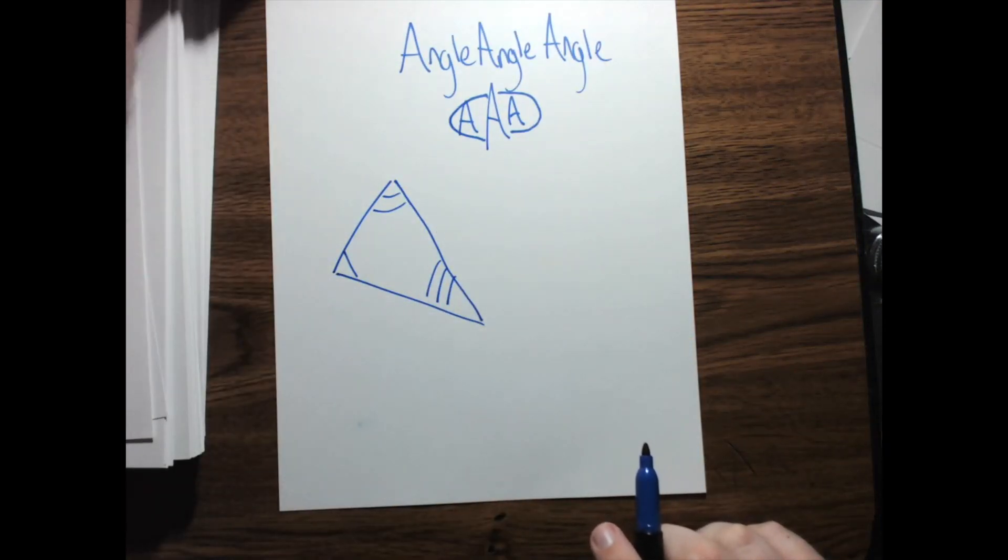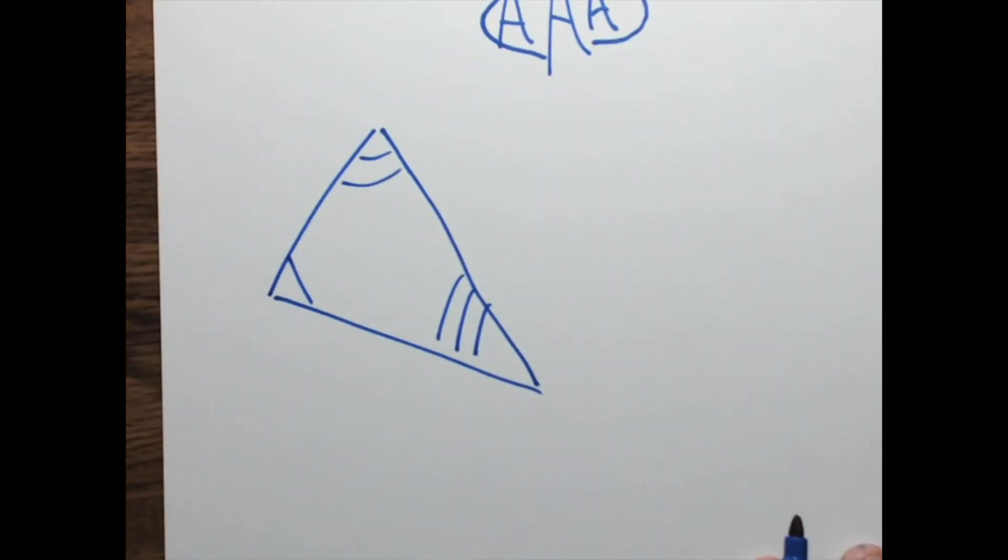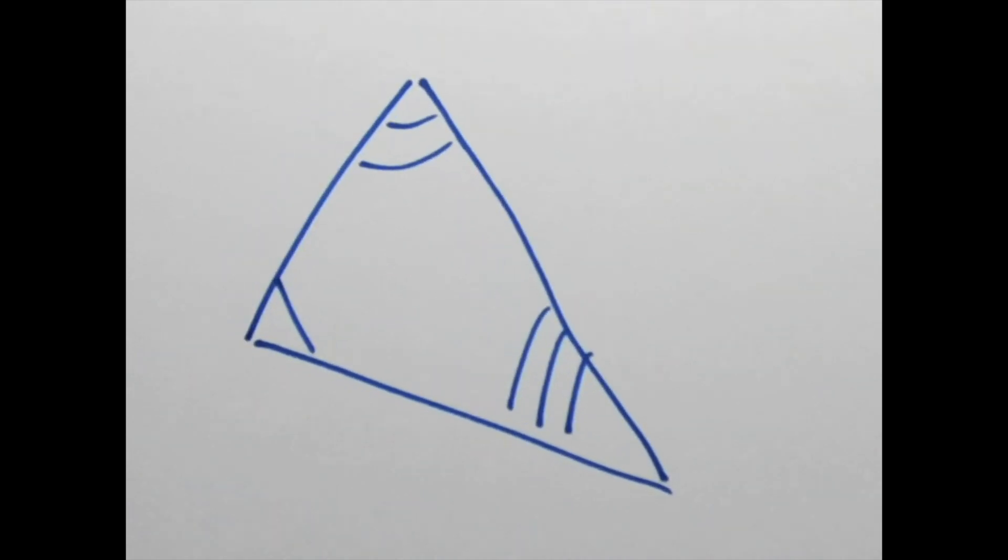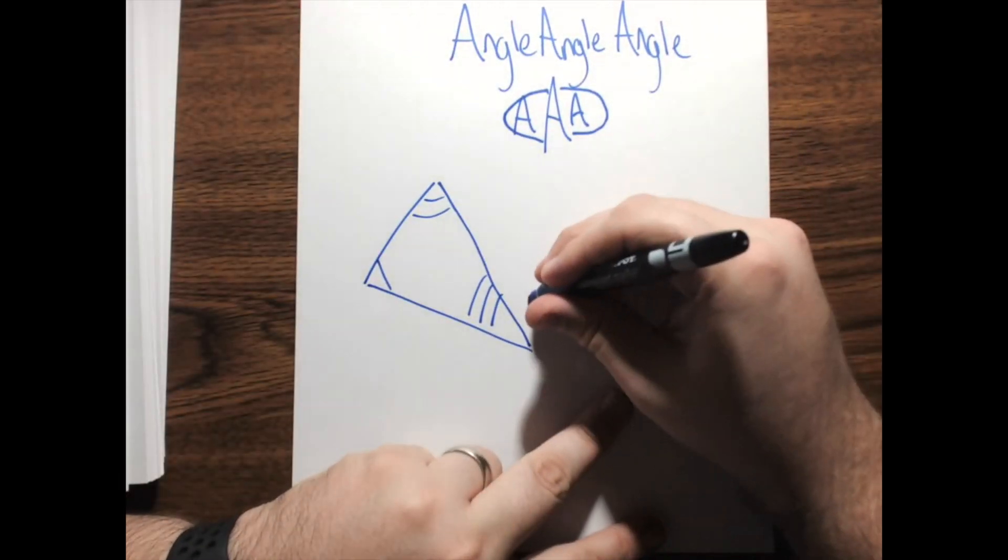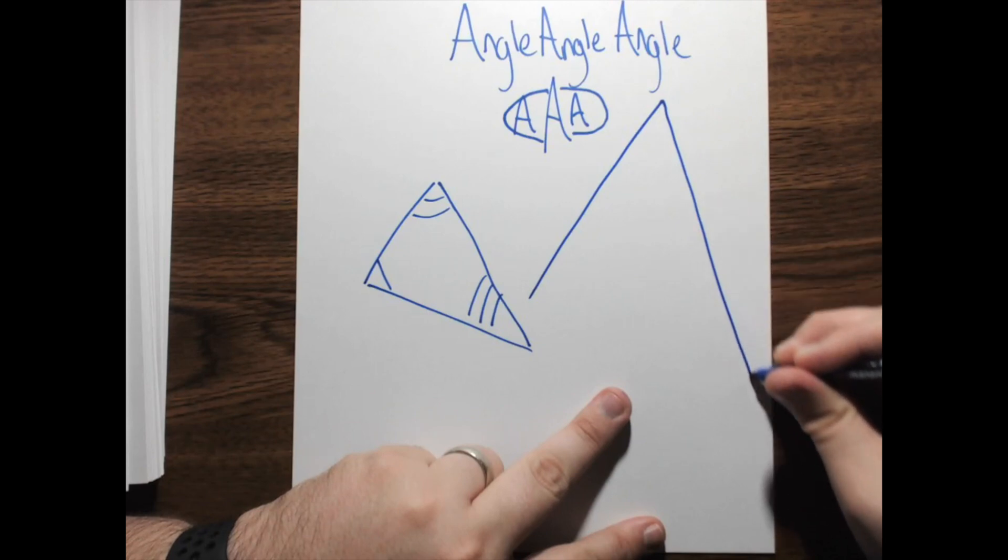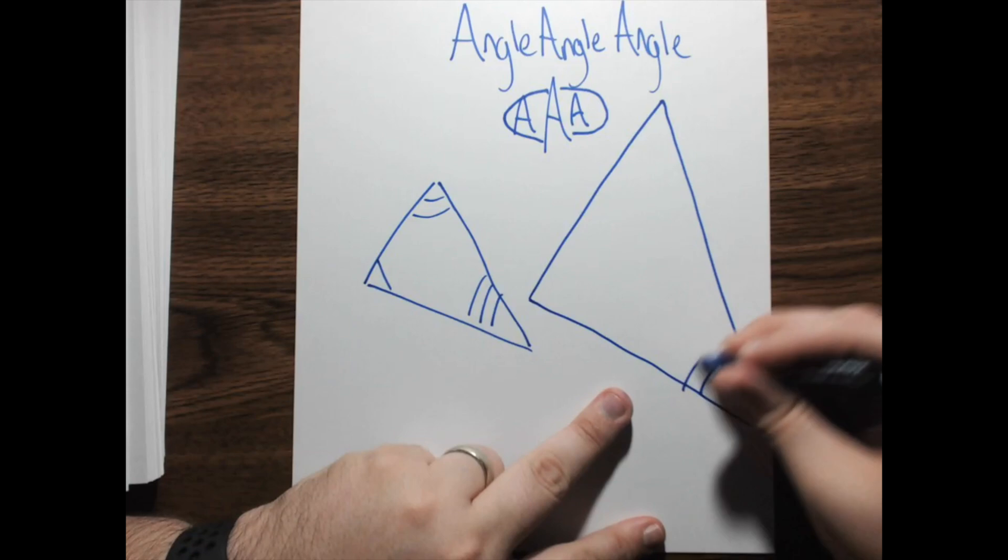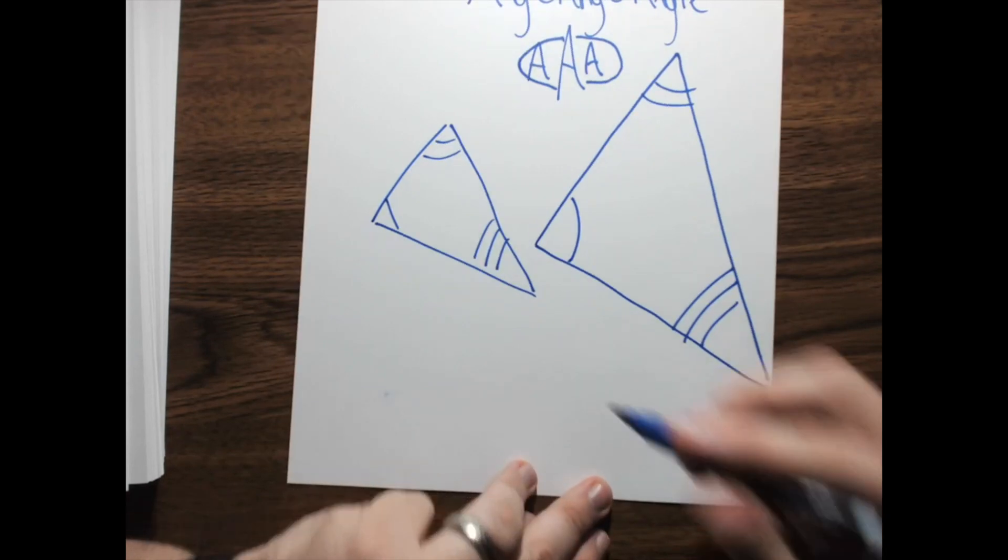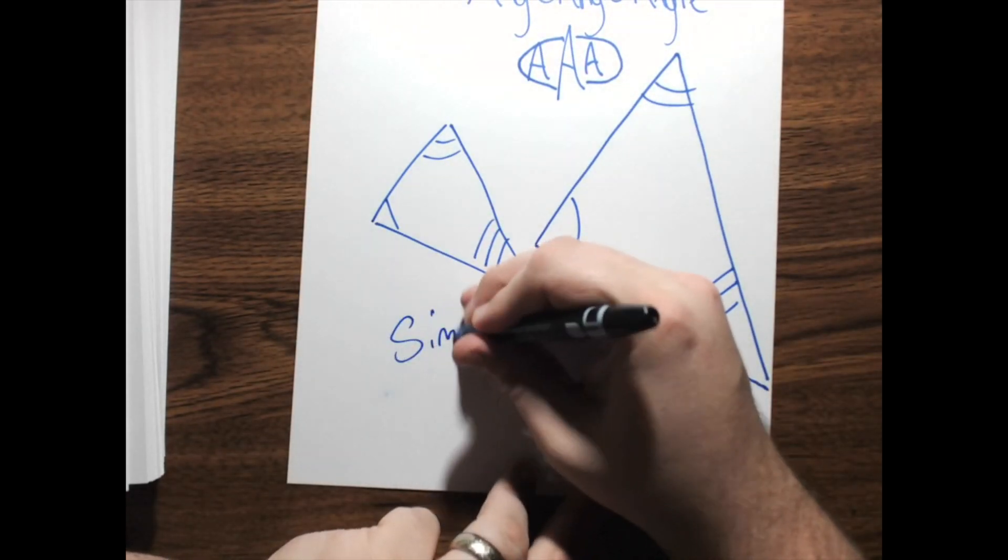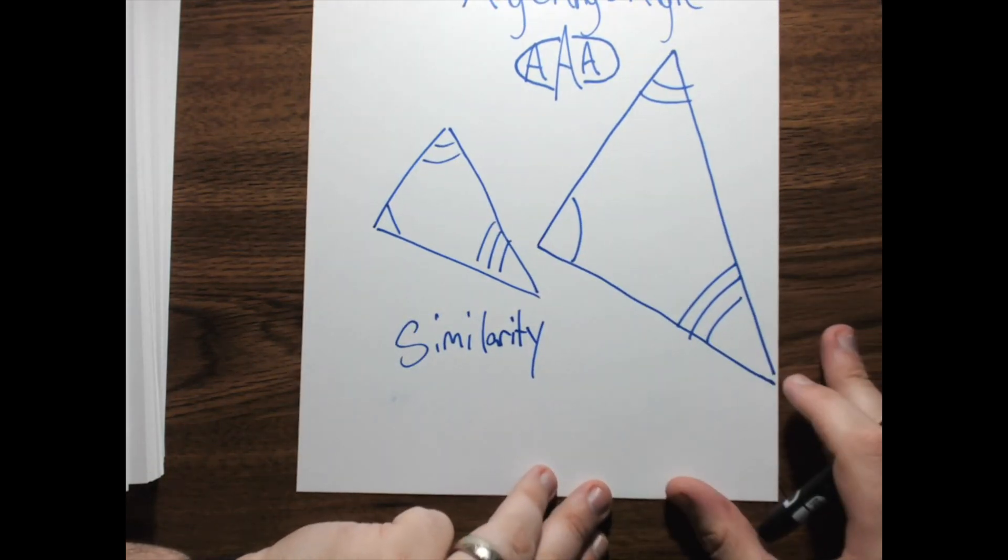Is this triangle the same size it was before on your screen? Is it now? But, the angles didn't change. I just moved it. So, the fact is... In the end, angle, angle, angle only proves what we call similarity. They're the same shape, but they might not be the same size.